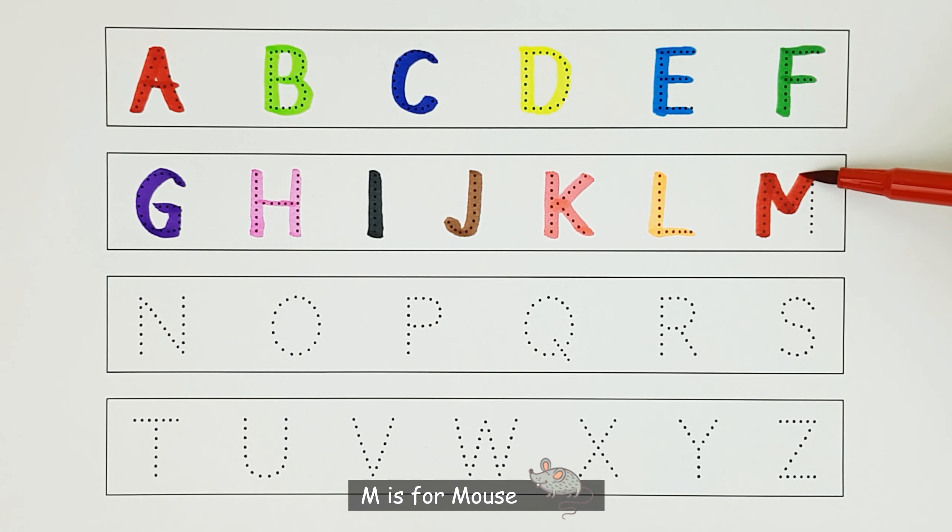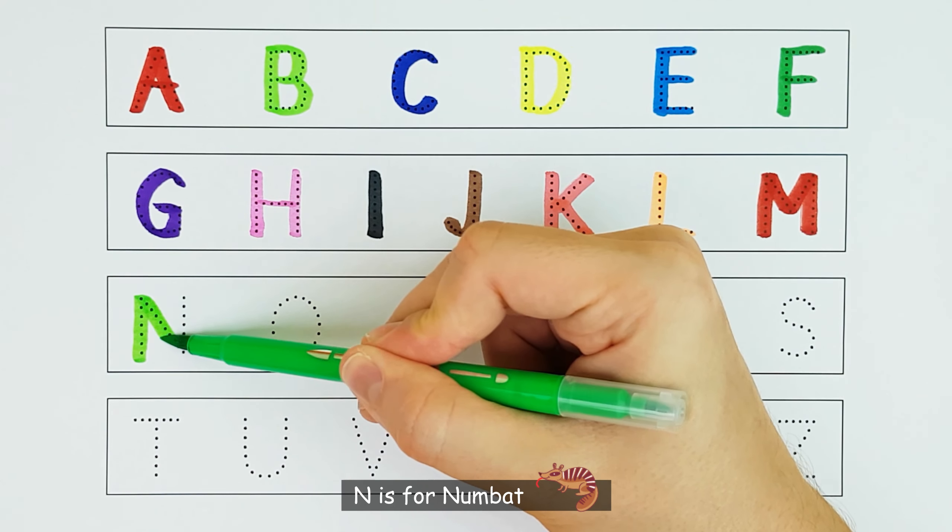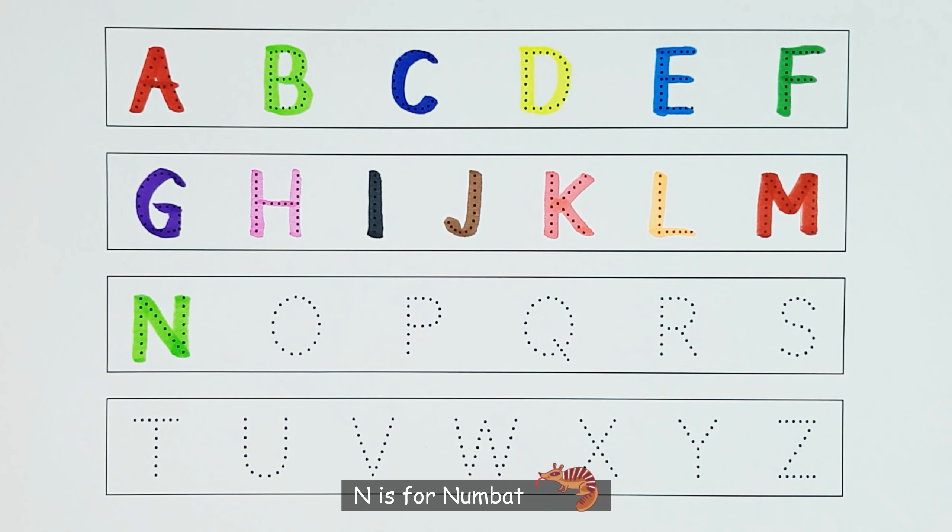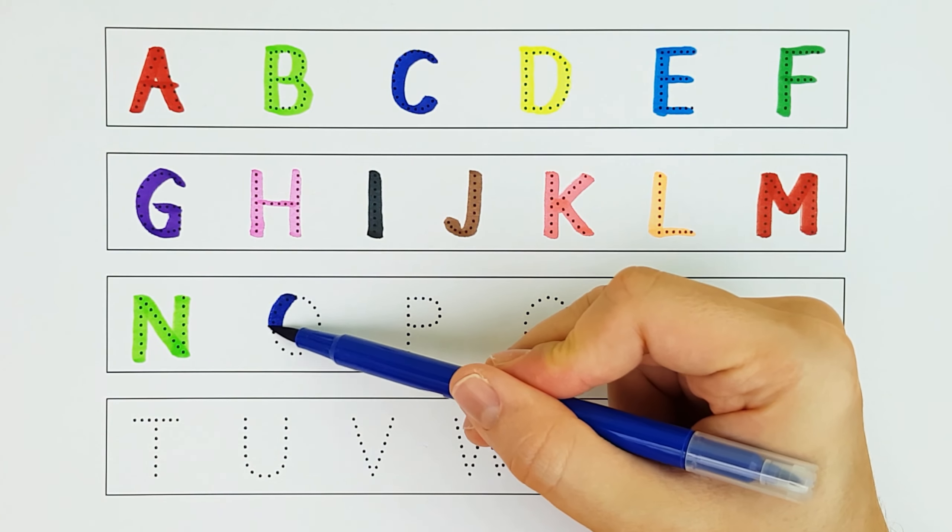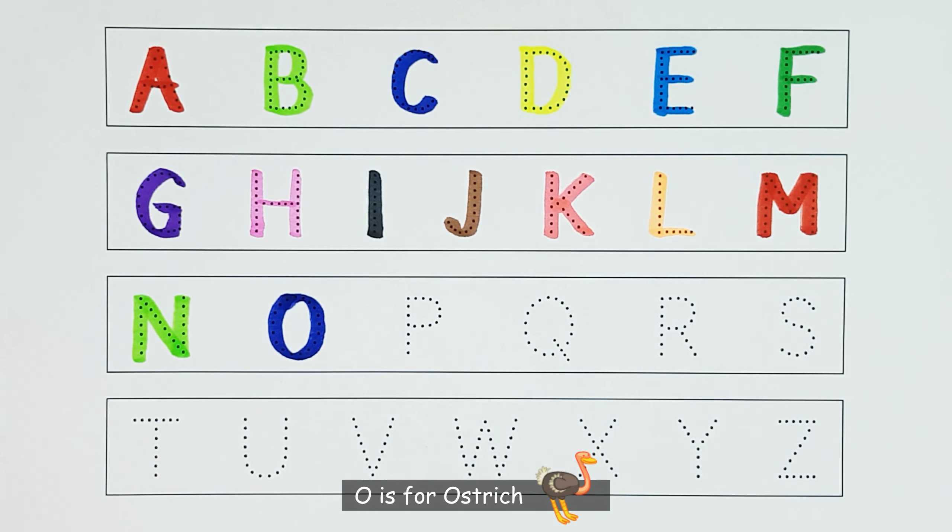M. M. M is for mouse. M. N. N is for numbat. N. O. O is for ostrich. O.